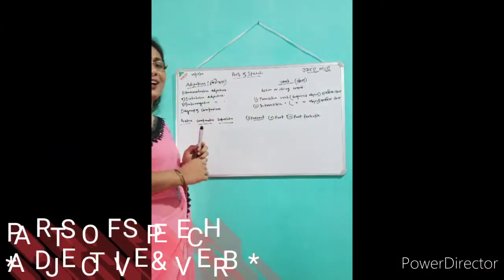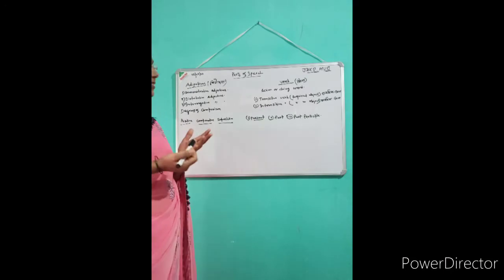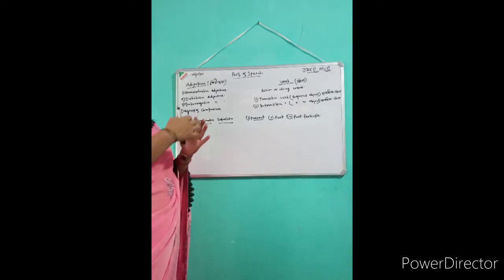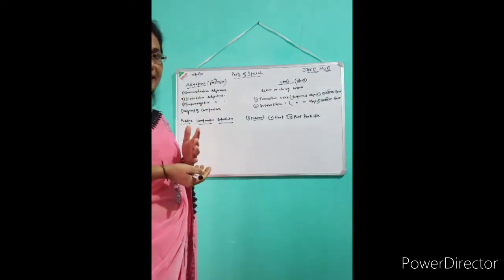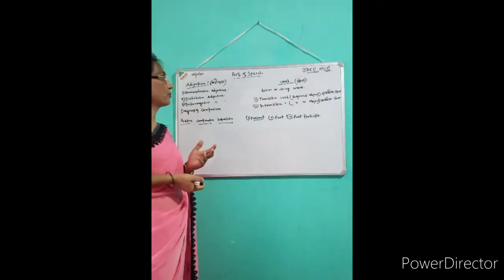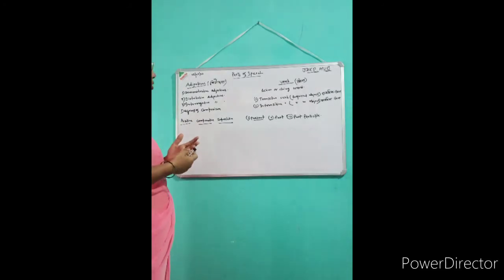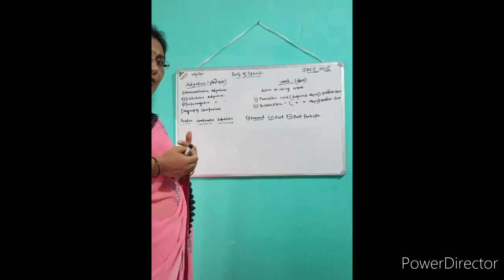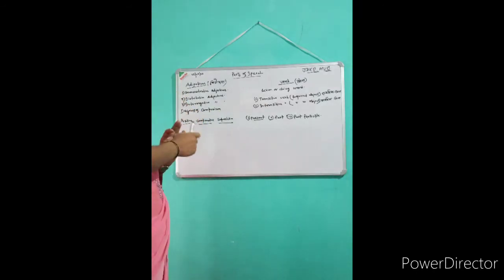Good morning students. Today we are here with another session of parts of speech. I shall discuss today two topics: adjective and verb — what is adjective, what types of adjectives are there, how we can use it in sentences, and how it will help in our future. The next topic will be verb. I am going to translate today because Hindi students will also understand some Hindi grammar from this topic. Let us start.